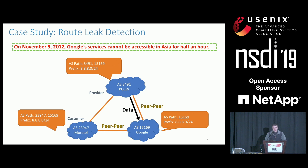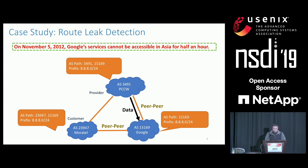Let's take route leak detection as a concrete example. Route leaks are a class of common routing incidents which can cause large internet service disruptions. They are caused by violations of the policies among the ASes involved. For instance, Google's peer, PCCW, used to send traffic directly to Google to reach its prefixes. In the orange boxes, we show the AS path to reach one of Google's prefixes. On November 5th, 2012,